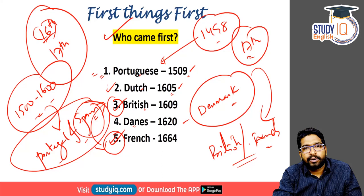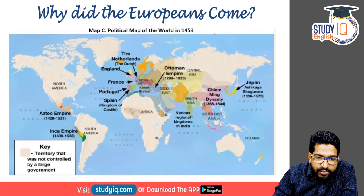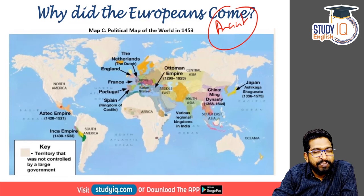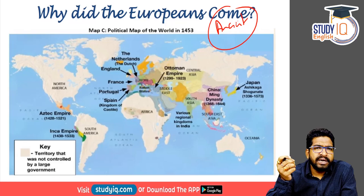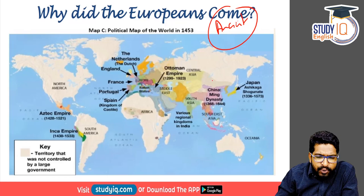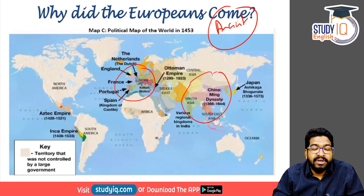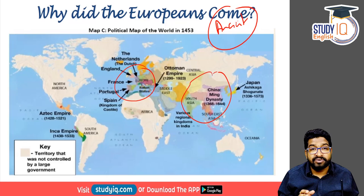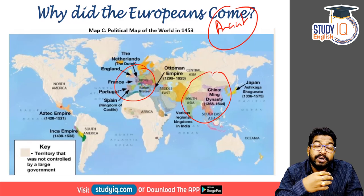Let's understand why the Europeans came to India at all. India was one of the greatest civilizations in the ancient world, alongside China. The ancient era belonged to India and China. But during the medieval period — at the cusp of medieval and modern — power shifted towards the Europeans, and international politics became Eurocentric from the 15th century all the way to the 20th century. European powers like the Netherlands, France, Portugal, Spain, and Britain emerged as the main economic and military centers.